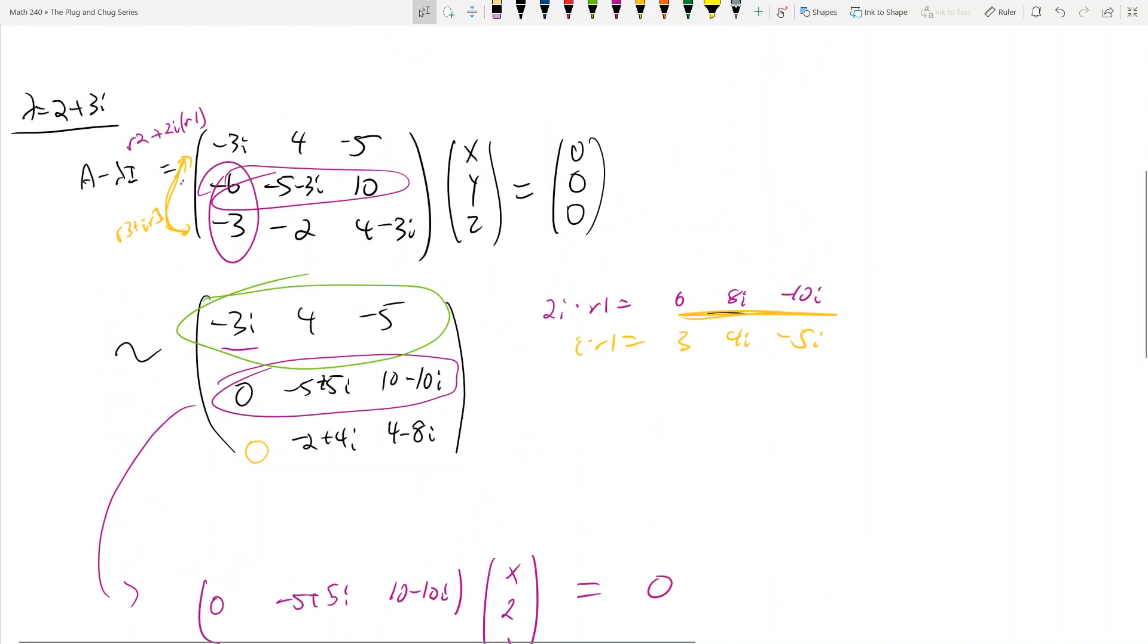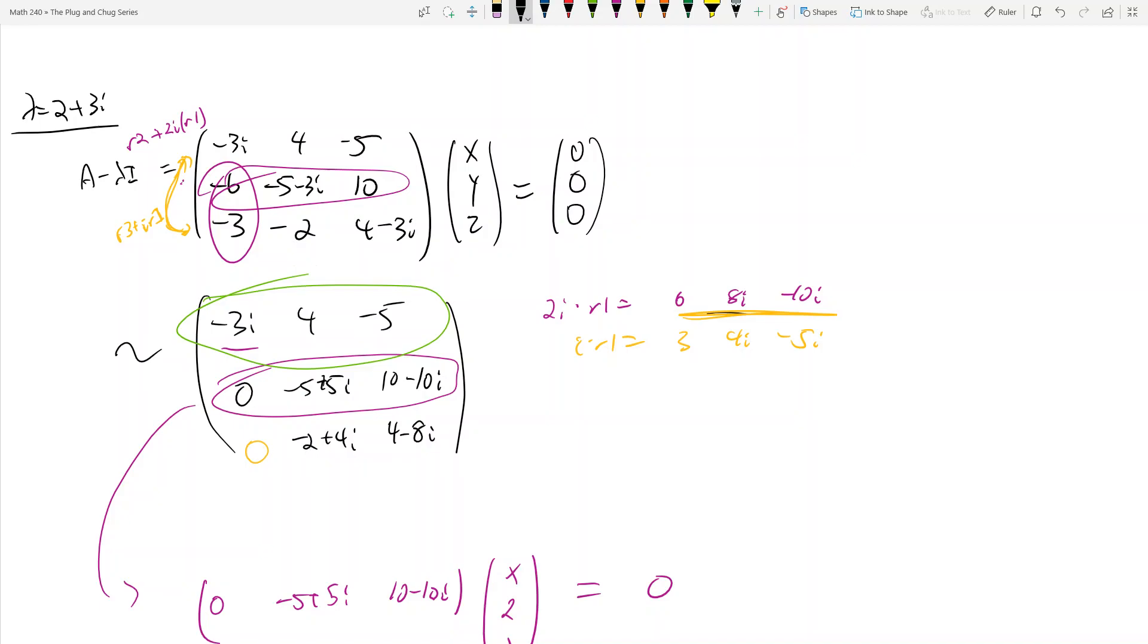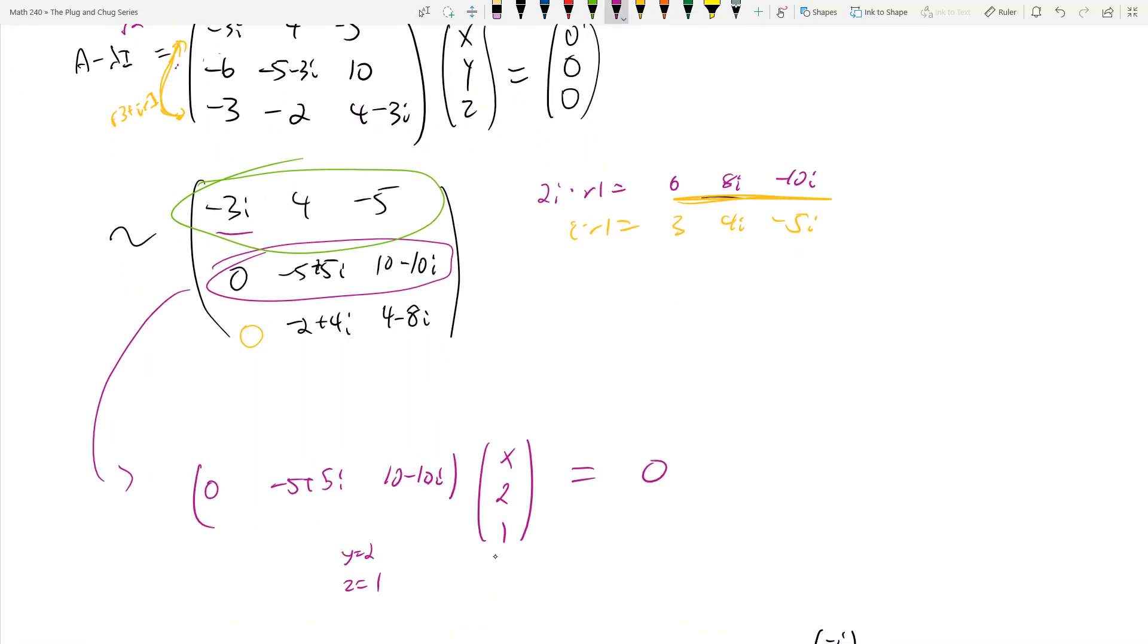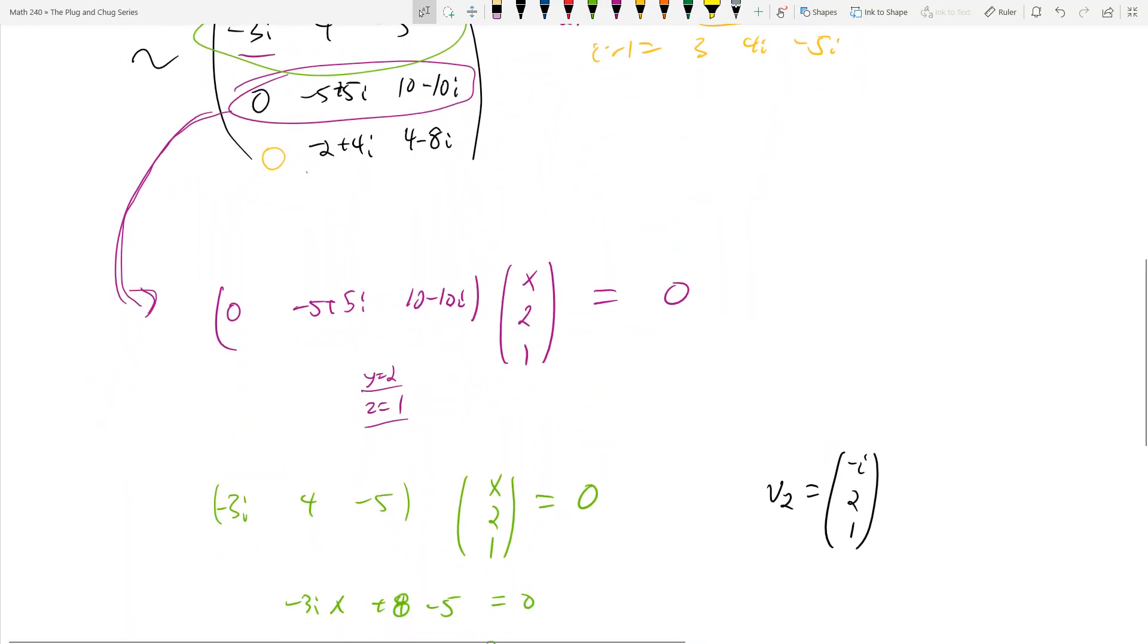To recapitulate the steps: you have 2 plus 3i, subtract it along the diagonals, and then row reduce in your standard row echelon ways. Get your zeros in the standard ways. Once you get the zeros, you pick individual rows, and you need to pick a row that has a zero in it. You could have picked the second or third row.